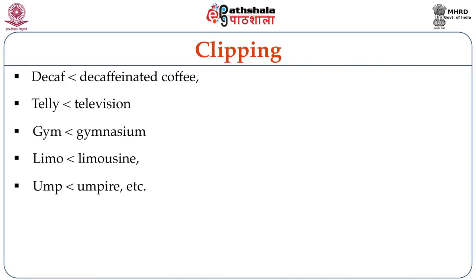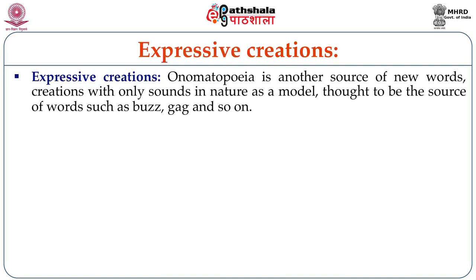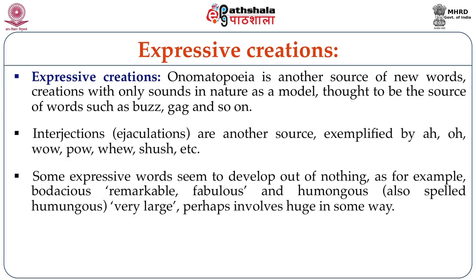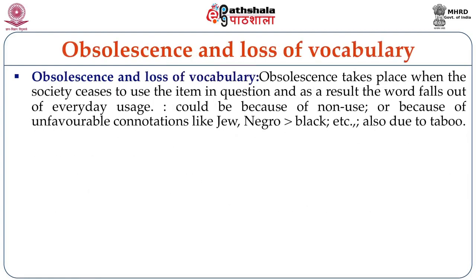The next type is expressive creations. Onomatopoeia is another source of new words — creations with only sounds in nature as a model, thought to be the source of words such as 'buzz', 'gag', and so on. Interjections also can be observed as a new source, like 'oh', 'wow', but obviously they are highly limited. Then the next important one is obsolescence and loss of vocabulary. Obsolescence — that is, the loss — takes place when the society ceases to use the item in question and as a result the word falls out of everyday usage. This could be because of non-use or because of unfavorable connotations like 'Jew', 'Negro', etc.